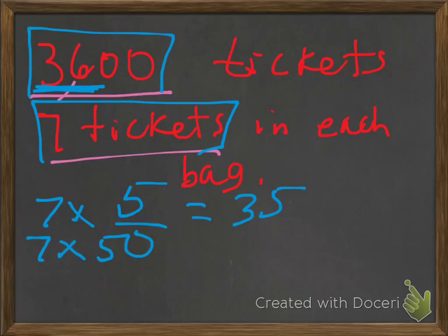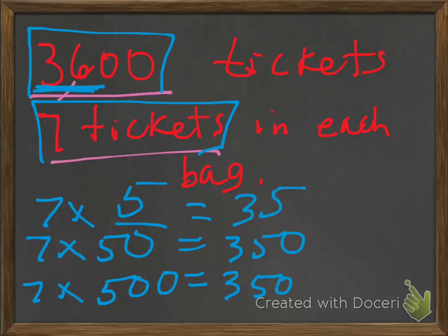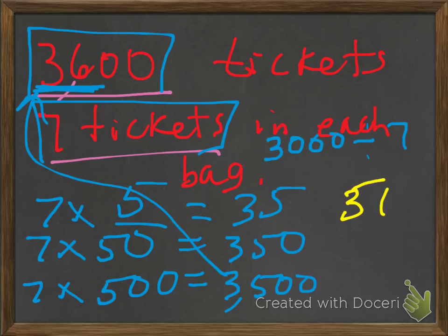7 times 50 gets us 350. 7 times 500 would then get us 3,500, which is close to that. So in other words, 3,000 divided by 7 is about 500.